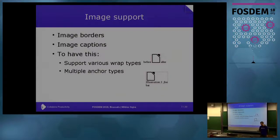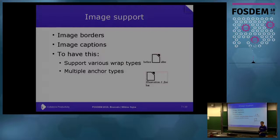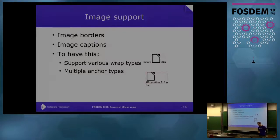The other new feature is much better image support. 6.0 had support for simple inline images, which I mostly added to test the part of the exporter that assembles the EPUB package — I wanted a use case for binary content. So I added minimal image support where inline images or character-anchored images are a good fit because they don't have special positioning. But now in 6.1 you can have much better support: various image borders, image wrap types, and image anchor types are all supported.